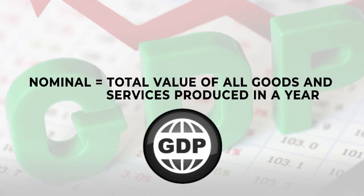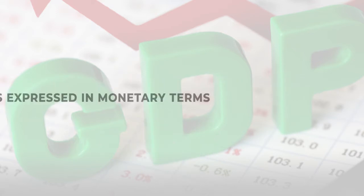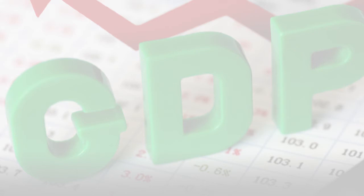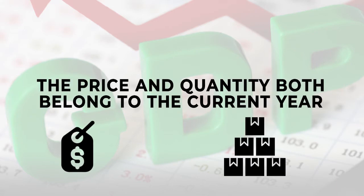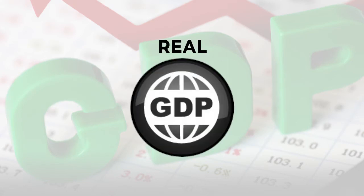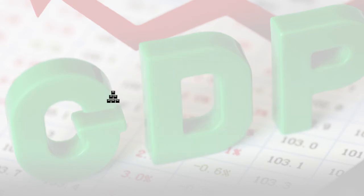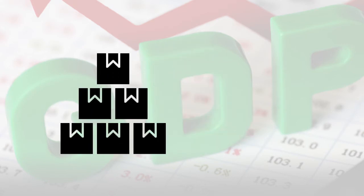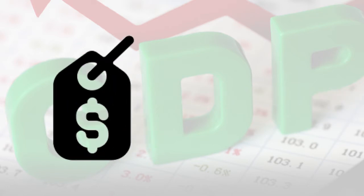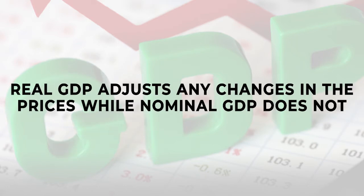Nominal GDP is the total value of all goods and services produced in a year. It is expressed in monetary terms, and both the price and quantity belong to the current year. On the other hand, in real GDP, the quantity produced is from the current year while the prices are of the base year. Real GDP adjusts for changes in the prices, while nominal GDP does not.